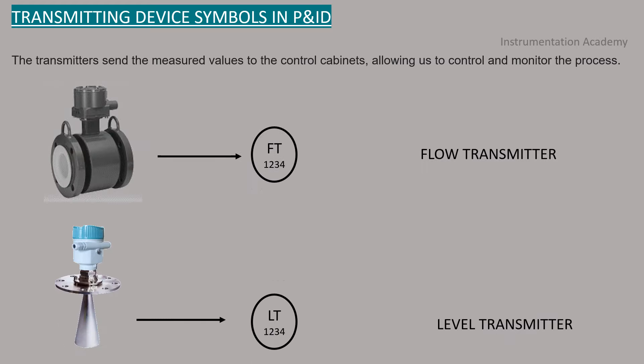Transmitting device symbols in P&ID. The transmitters send the measured value to the control cabinets, allowing us to control and monitor the process. This figure shows how common transmitters are represented in a P&ID.